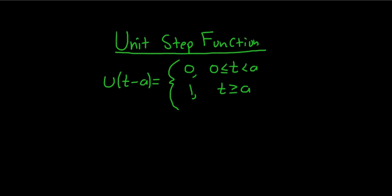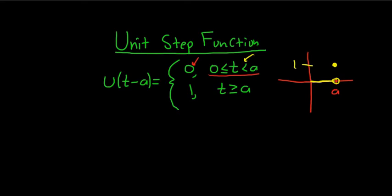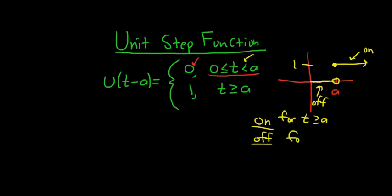Let's look at a graph of the unit step function. Here's the y-axis, the t-axis, and here's a. Between 0 and a, it's equal to 0 all the way until we get to a. At a, there's a little hole, and then it jumps up to 1. Think of it as being off before a, and on at and after a — just like an electrical switch.